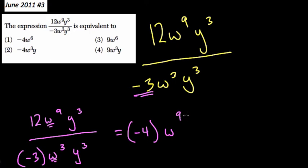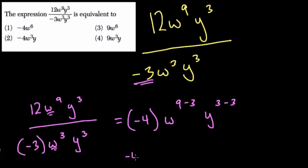We have w to the 9 minus 3, and then y to the 3 over y to the 3, and I'll show you that's just, of course, 3 minus 3. And we have negative 4 now, w to the 6th, y to the 0.